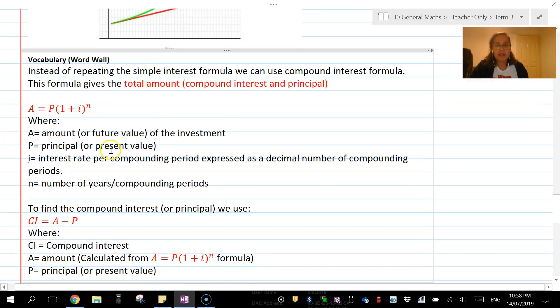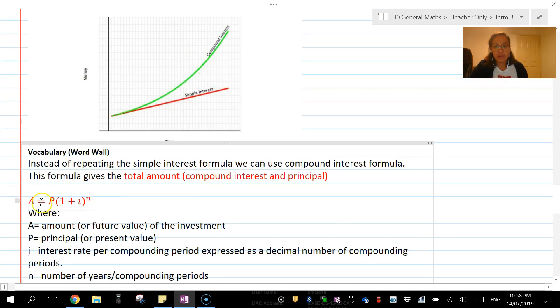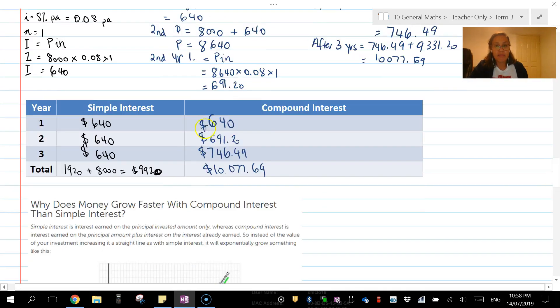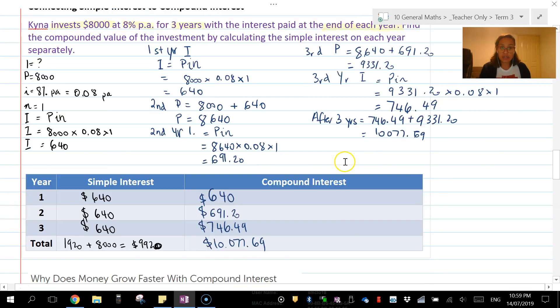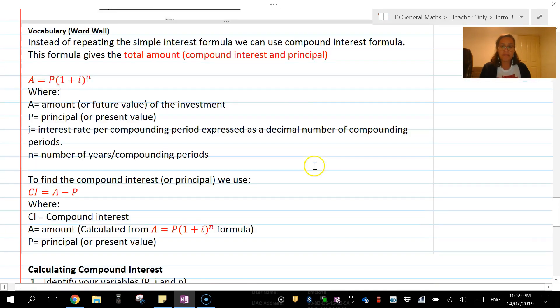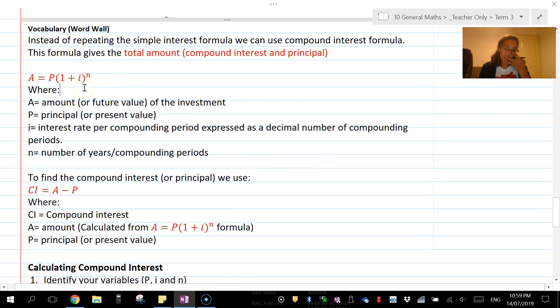Your compound interest formula is this one here, and it can be used instead of doing all of this. If we continue doing this over and over again, we're bound to make a mistake. To reduce the amount of errors, we use one simple formula.